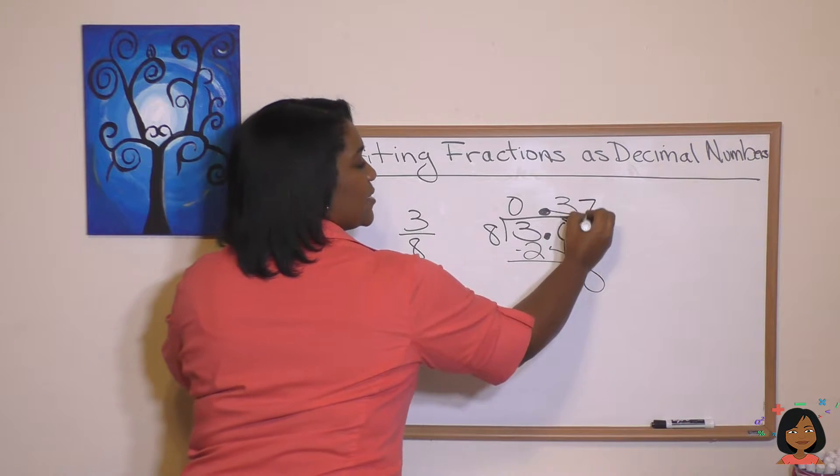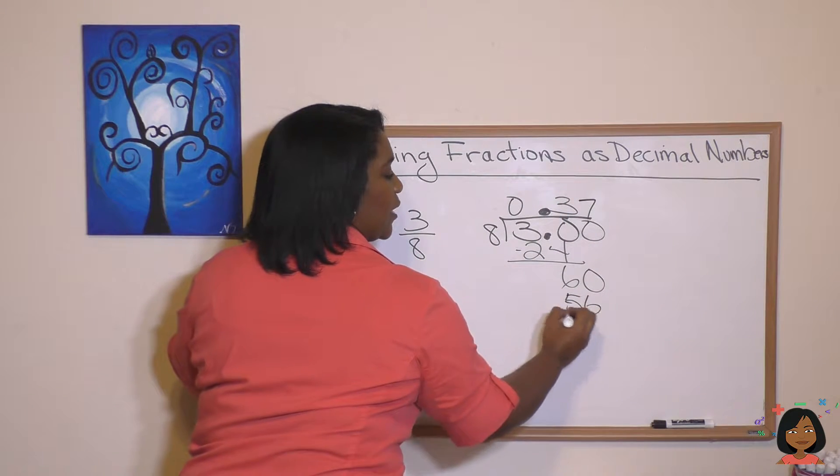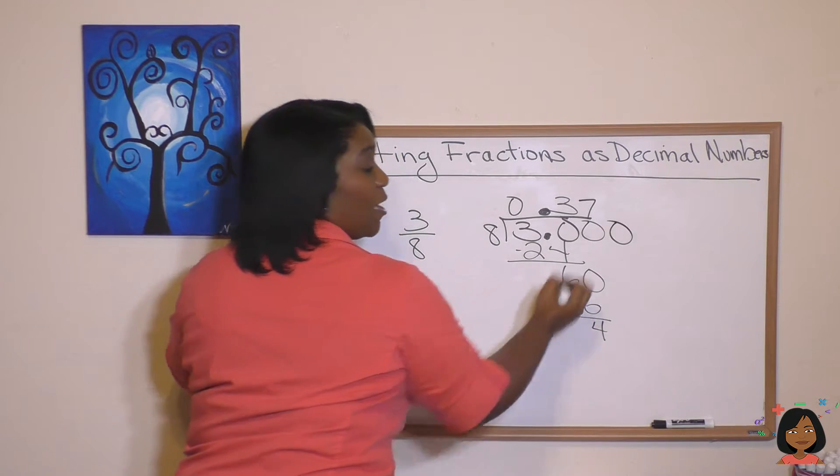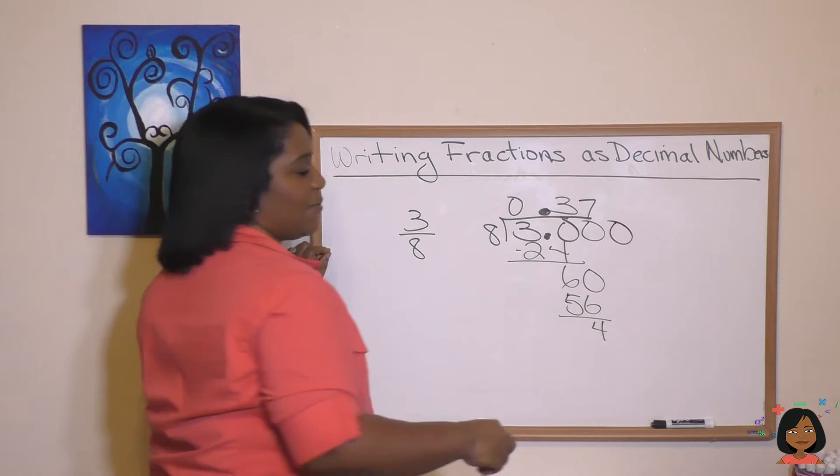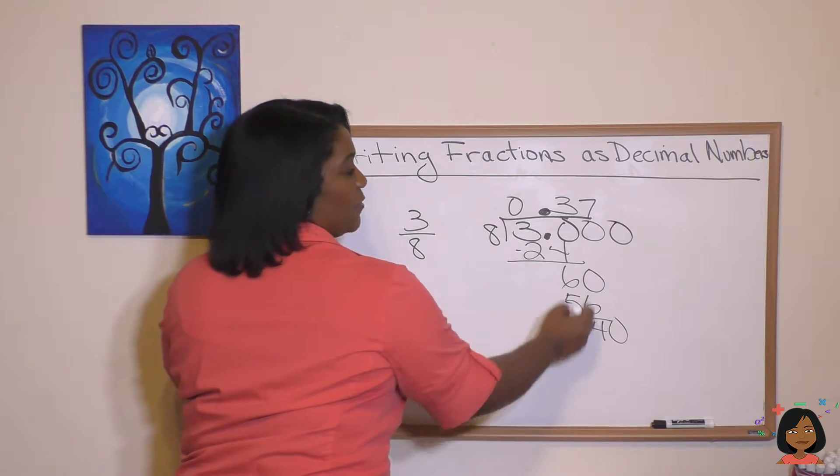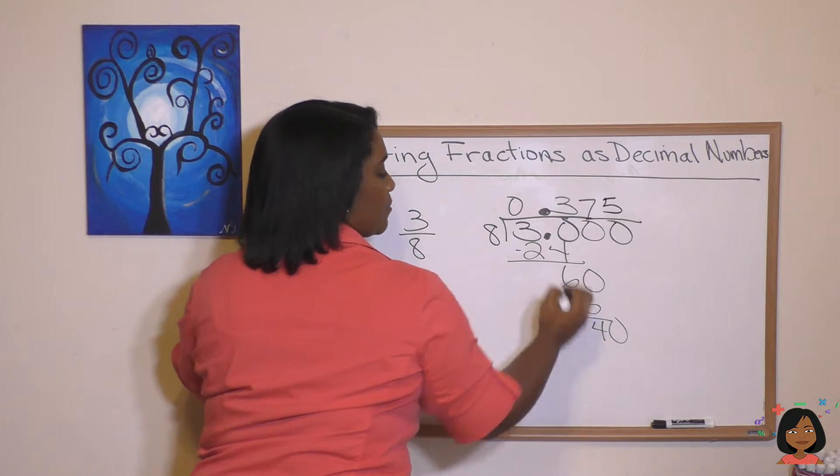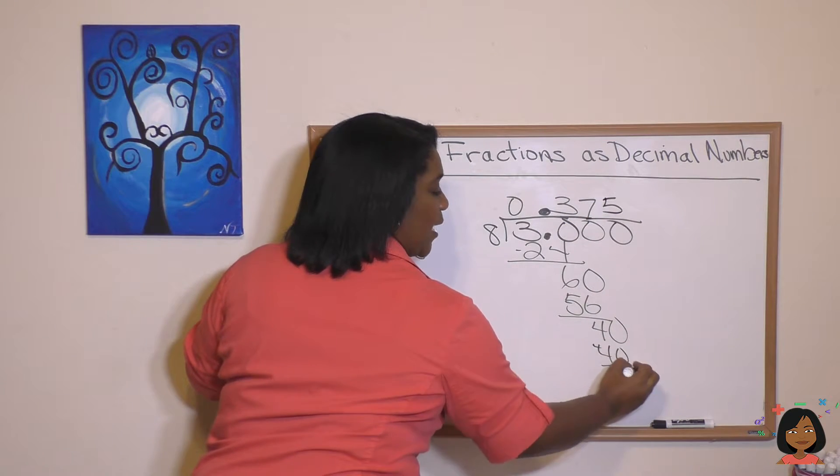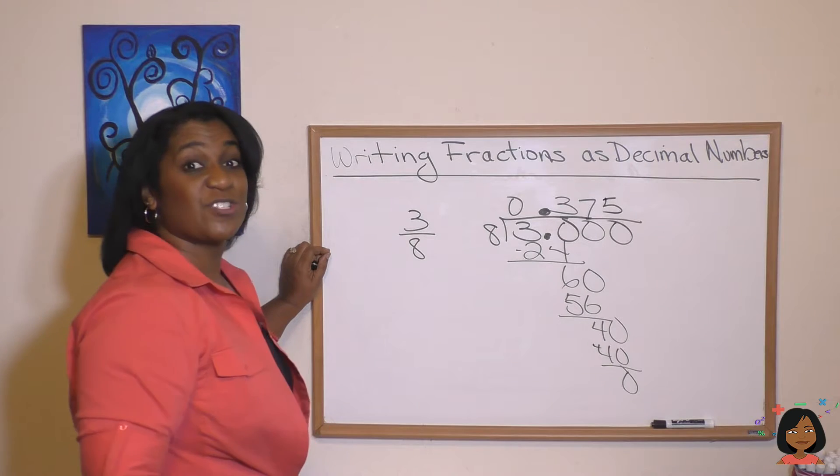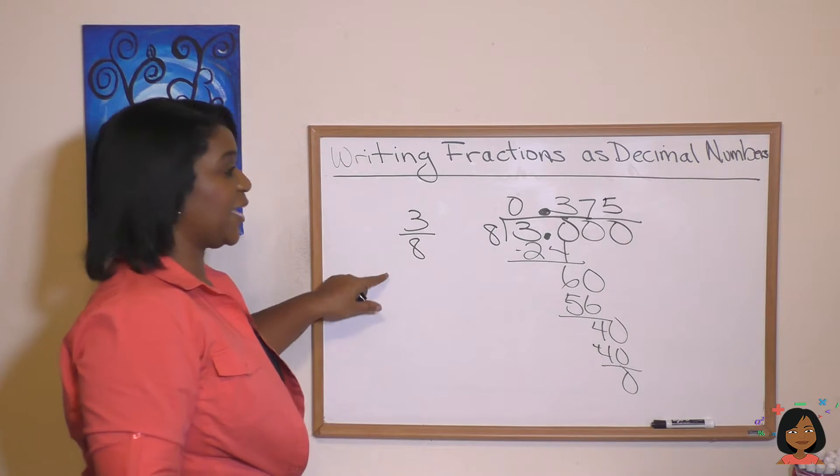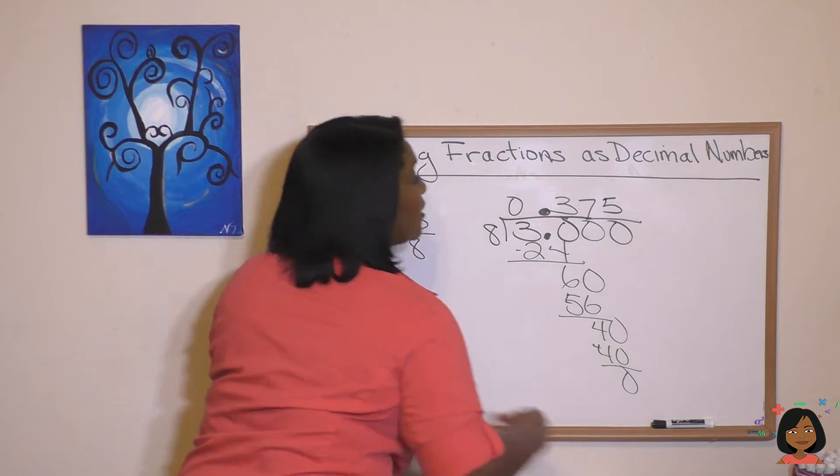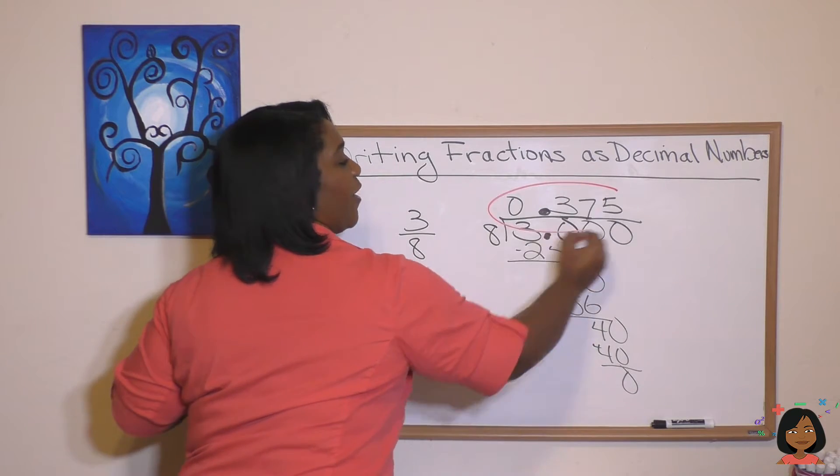8 goes into 60, 7 times. I have a 4 left over. I'm going to put another 0 and keep going. 8 goes into 40, 5 times, which is 40. And I'm out with the 0 there. So the decimal equivalent for 3 eighths is 0.375.